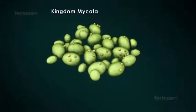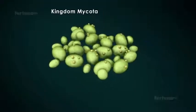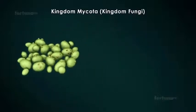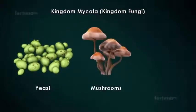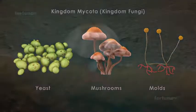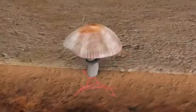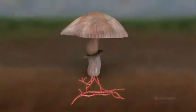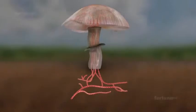Kingdom Mycota, also called Kingdom Fungi, includes fungi such as yeast, mushrooms, and molds. The body of a fungus is made of long thread-like structures called hyphae. Its members can be free-living, parasitic, or symbiotic.